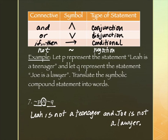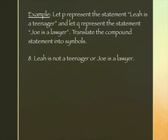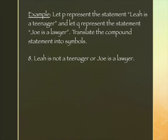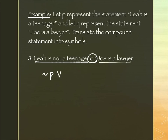Now we do the same thing backwards — starting with words and creating symbols. Given: P is "Leah is a teenager," Q is "Joe is a lawyer." The statement is "Leah is not a teenager or Joe is a lawyer." "Leah is not a teenager" becomes tilde-P, the word "or" becomes a V, and "Joe is a lawyer" is just Q. So the symbol form is: tilde-P ∨ Q.